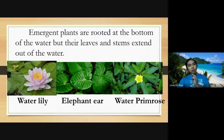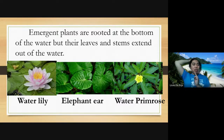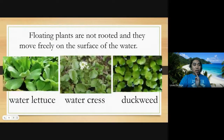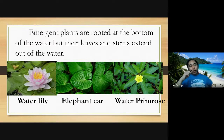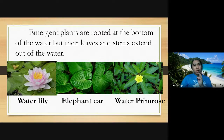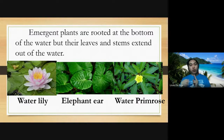Next are emergent plants. These plants are rooted at the bottom of the water but their leaves and stem extend out of the water — unlike floating plants which just float freely. The roots are submerged and attached to the bottom, but they grow and bloom on the surface. Examples are water lily, elephant ear, and water primrose. Their leaves are smooth so water does not penetrate them, and their roots are thick so they don't rot in the water.